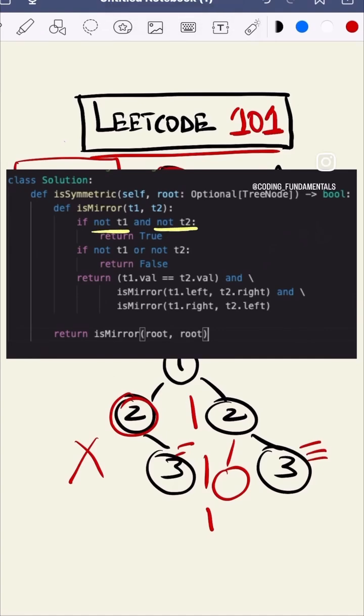If both the conditions are true we are sending true. If either one of them is there then we are sending false. And we are sending the recursive value for the left and right, and right and left.